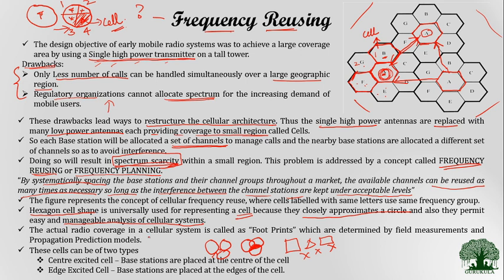The actual radio coverage in a cellular system is called the footprints, which are determined by field measurements and propagation prediction models. There are two types of cells: the first is the center excited cell and the other is the edge excited cell. In the center excited cell, the base station is placed at the center of the cell. In the edge excited cell, the antennas are mounted on any of the edges of the cell.